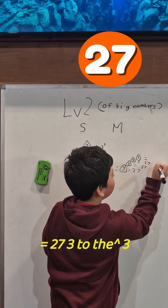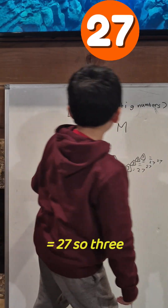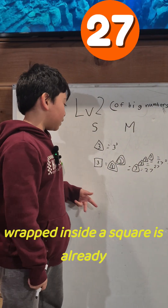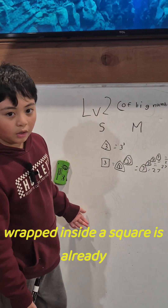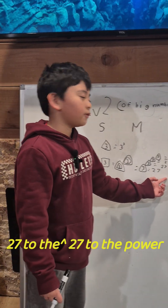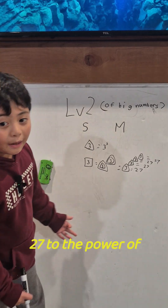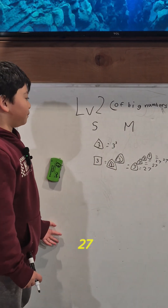3 to the power of 3 equals 27. So 3 wrapped inside a square is already 27 to the power of 27 to the power of 27.